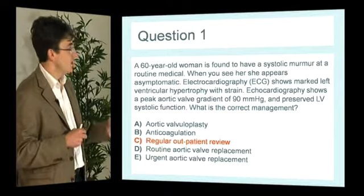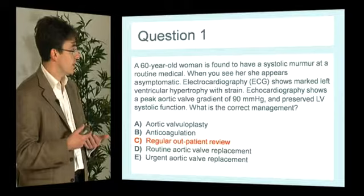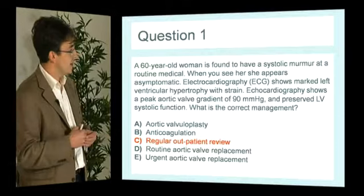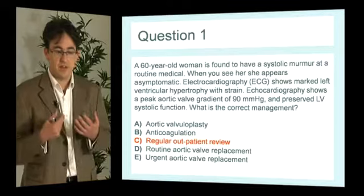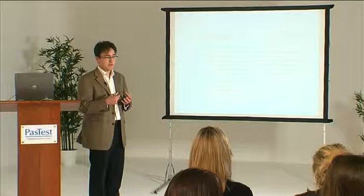Her echo shows a gradient of 90 mmHg, clearly indicating moderate to severe aortic stenosis, but most importantly she has preserved left ventricular systolic function. So we've got someone who is asymptomatic with features of severe aortic stenosis but preserved LV systolic function — there's nothing telling me we need to operate urgently. Routinely we would follow her up in clinic at four-to-six month intervals, repeating her echocardiogram looking primarily to see if the left ventricle had increased in size or if function had decreased.